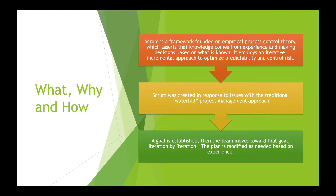Before Agile approaches became popular, the prevailing methodology was known as waterfall. This was a phased approach, with control gates determining when a project moves from one phase to another. These projects were often plagued with large schedule slips, budget overruns, quality challenges, and morale issues. The Agile response to solving these issues set the stage for the development of the Scrum framework.